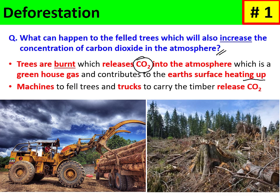Machines are used to chop down the trees and trucks carry the timber to where it is needed. Because these machines and trucks use petrol and diesel, combustion of these fuels also releases carbon dioxide back into the atmosphere. So there are multiple sources increasing CO2: lack of photosynthesis, burning of wood, and combustion of fossil fuels by the machinery and vehicles used.